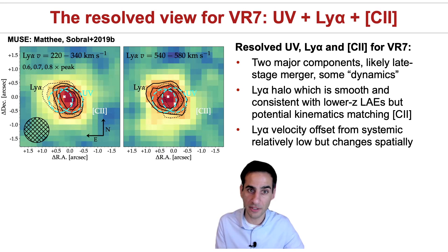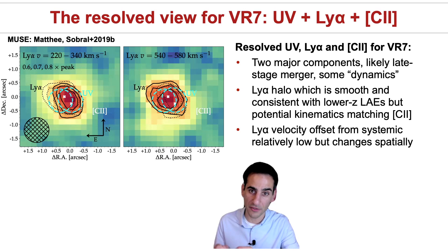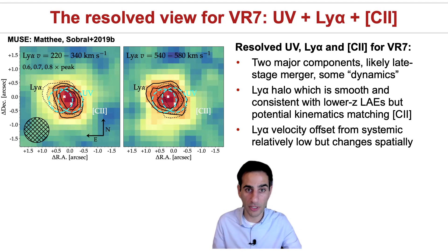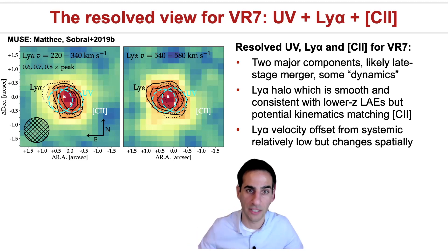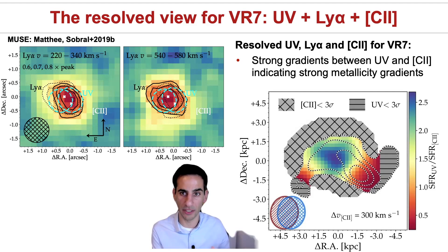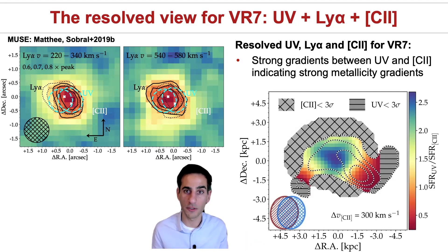The presence of a Lyman-alpha halo very similar to sources at low redshift further indicates we're seeing a galaxy sitting on an ionized bubble. The Lyman-alpha velocity offsets from systemic are always relatively low, consistent with an ionized bubble, but they change spatially — suggesting not a perfectly spherical bubble but a more inhomogeneous ionized region depending on the line of sight. Very strong gradients in the C2-to-UV ratio are strong evidence for metallicity gradients, very likely resulting from the merger of components with very different metallicities that are now mixing.